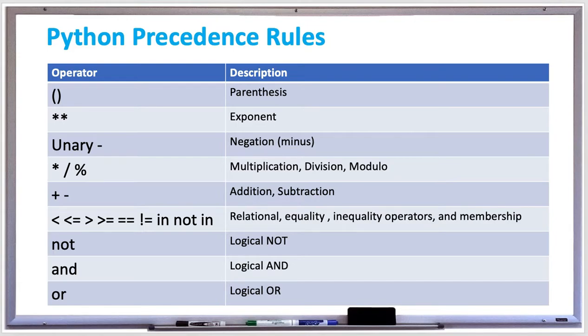The precedence rules tell you what happens first. The first thing that happens is it looks for everywhere there's parentheses and evaluates the stuff inside the parentheses first. So if you have a complex expression and